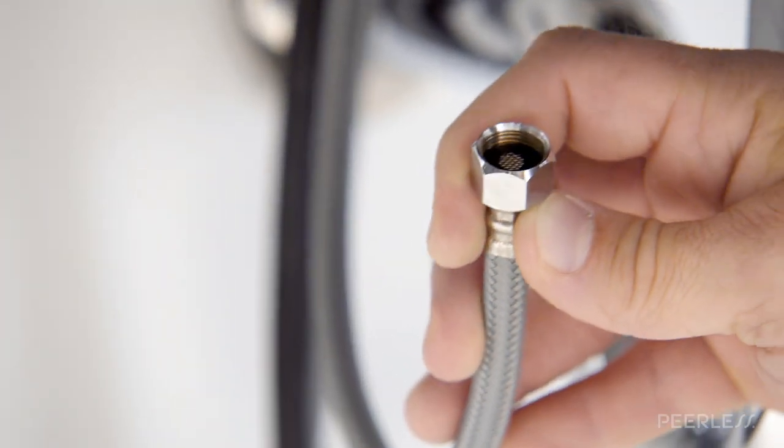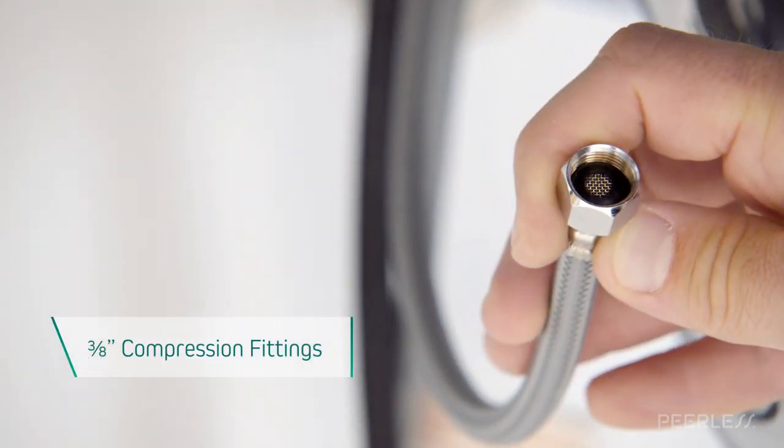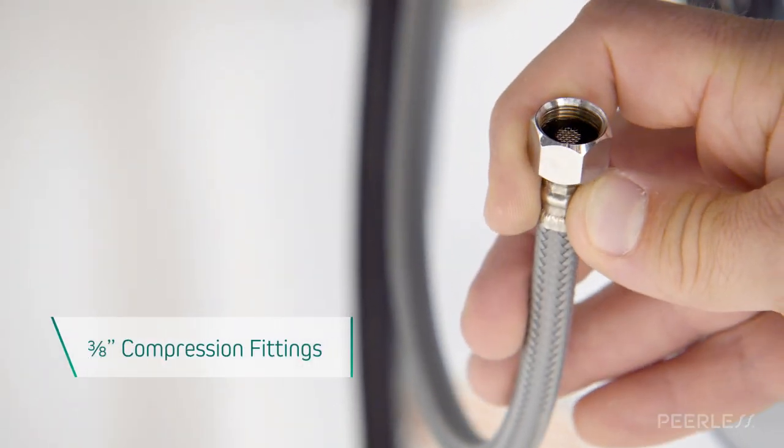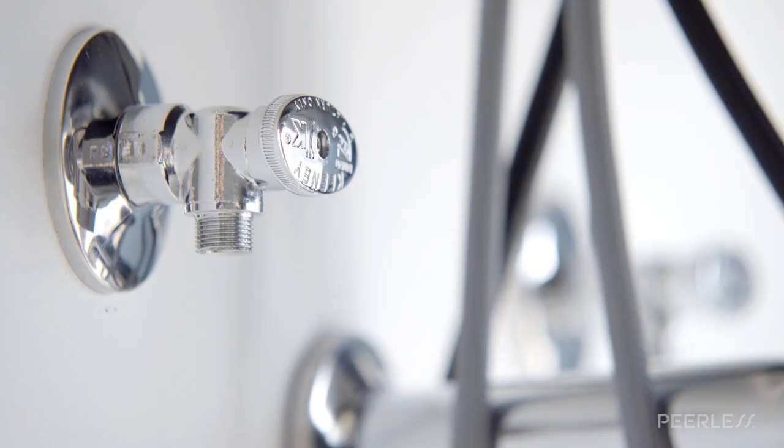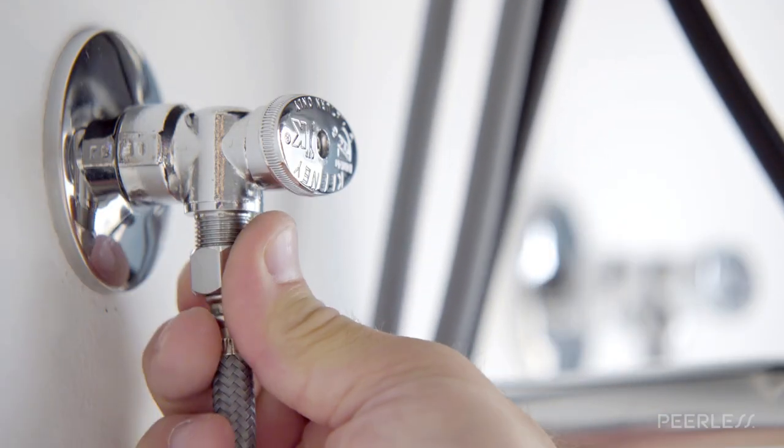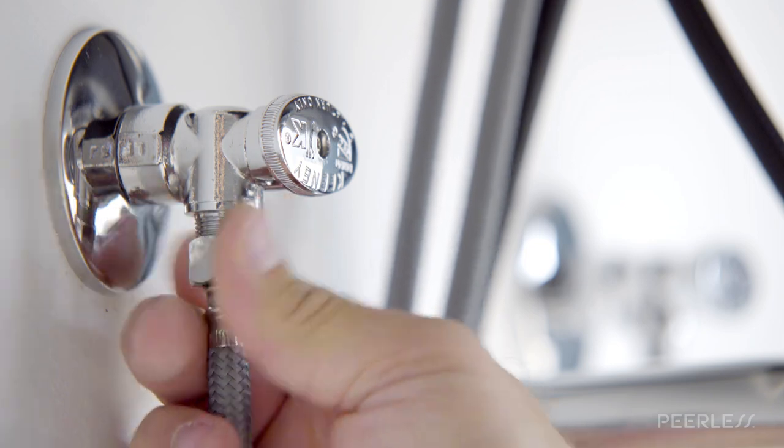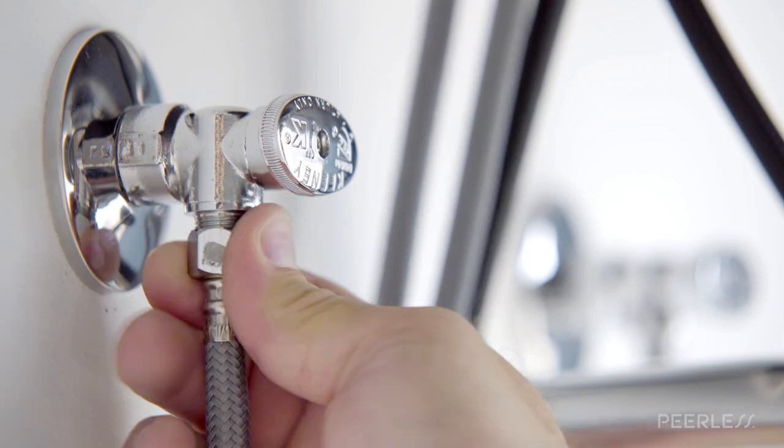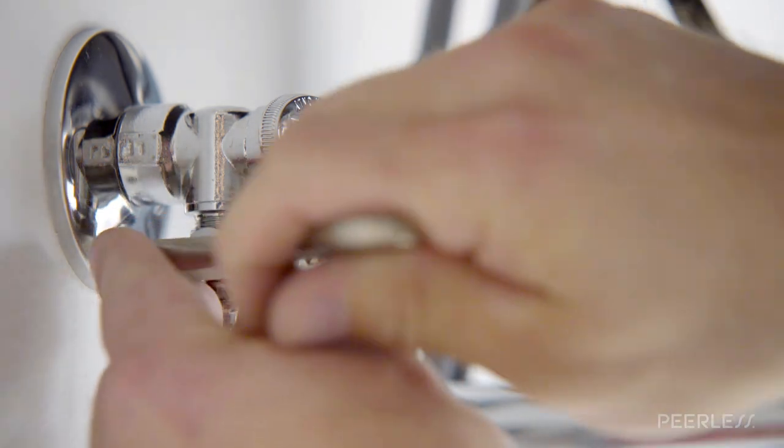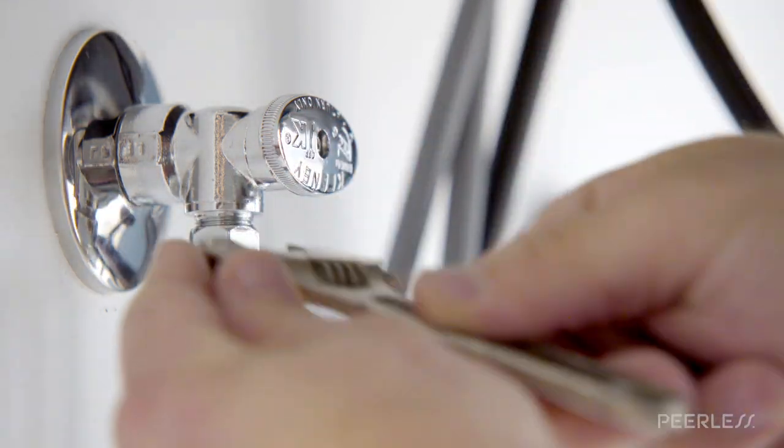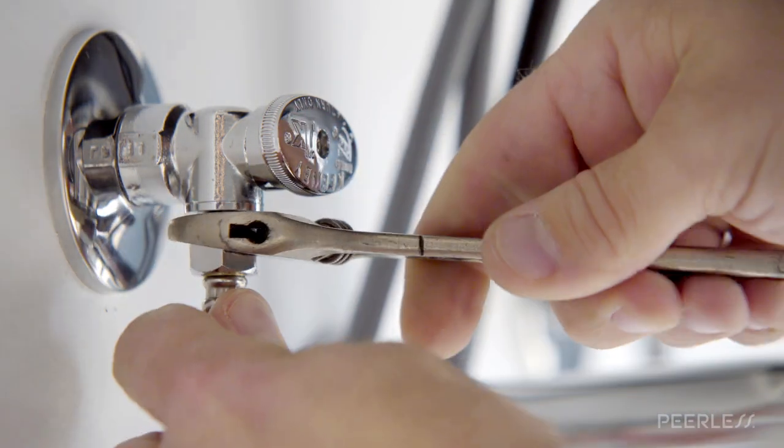Make sure all fittings and end connections are free of debris. The faucet connections are 3/8 inch compression fittings. Secure the metal nut on the faucet supply hoses to the supply valve connection and hand tighten. Then tighten one additional revolution with the wrench. Make sure you do not over tighten.